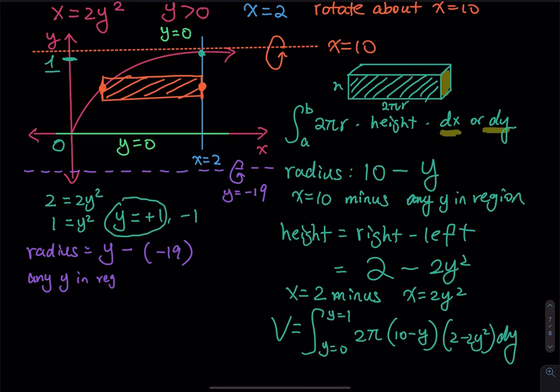So this is any y in the region minus y equals negative 19. And then the height, no change, right? So that is the blue line minus the red curve.